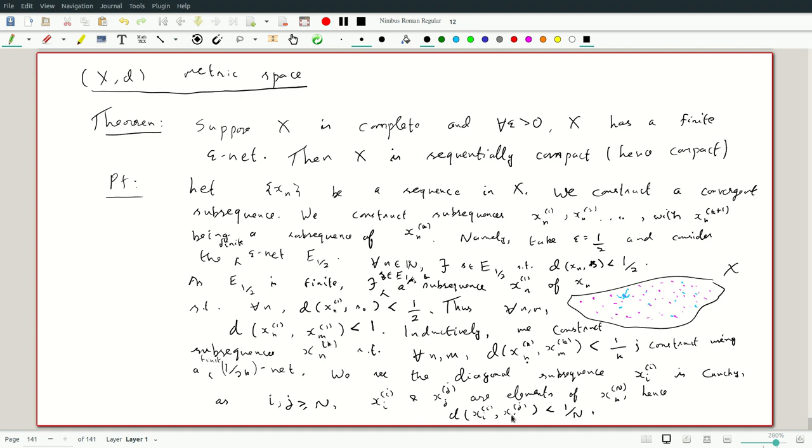So, if i and j are both, so this is the diagonal sequence, so if i and j are both greater than or equal to n, then this distance is less than 1 over n. Okay, so what have we shown? So, this is a Cauchy sequence. So, let me just use this space. So, xii is Cauchy. So, by completeness, xii is convergent.